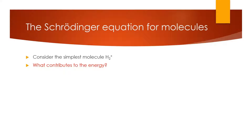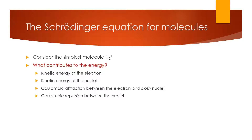The kinds of things that affect the energy of this molecule are: the kinetic energy of the single electron, the kinetic energy of the nuclei, Coulombic attraction between the electron and both nuclei, and Coulombic repulsion between the nuclei. If we had more electrons — for example, an H2 molecule rather than an H2+ ion — we would also have repulsion between the electrons.